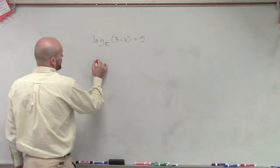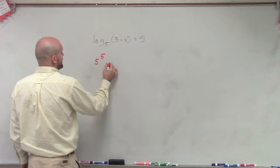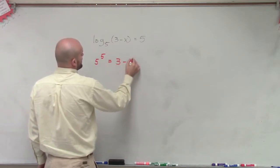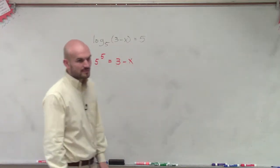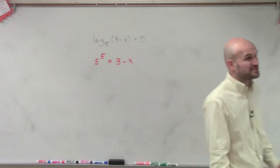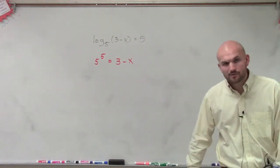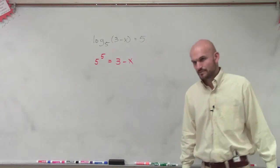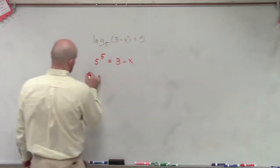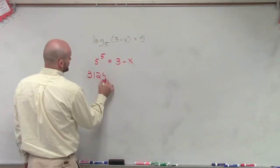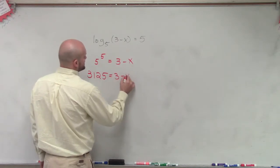So to rewrite this in exponential form, that's going to be 5 to the fifth power equals 3 minus x. And so now we just need to evaluate 5 to the fifth power, which is 3,125. So we have 3,125 equals 3 minus x.